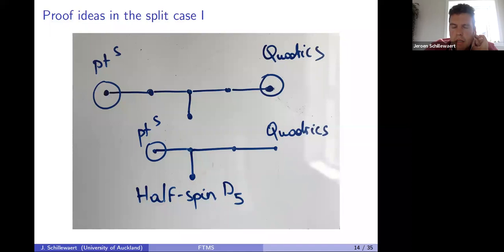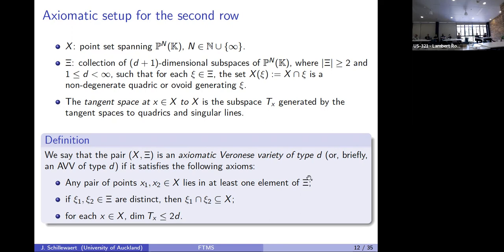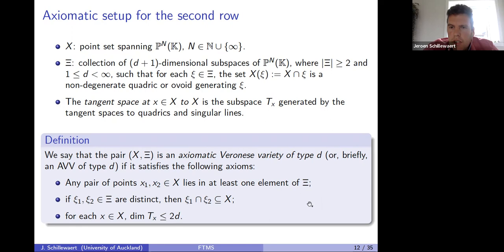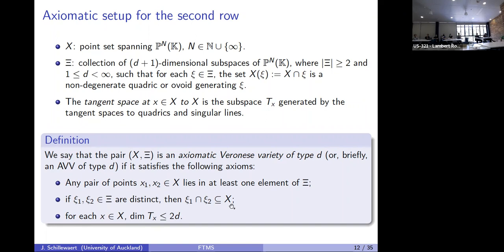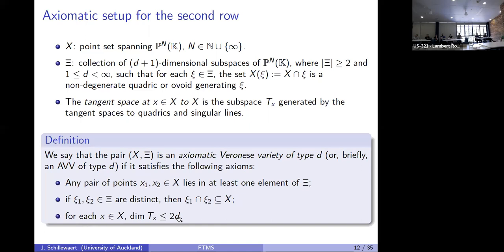At some point the varieties become simple enough to recognize, and you build them up from bottom to top. But for this inductive procedure to work, the axioms need to be well-suited for induction. The first two axioms work well inductively. The hard part is the third axiom — bounding the dimension of the tangent space — because a priori there is no reason for it to diminish sufficiently when taking a residue. Going from d to d−2 requires the tangent space dimension to drop by four, which is quite hard to prove.